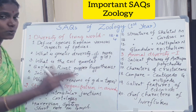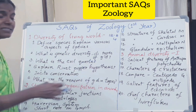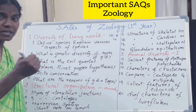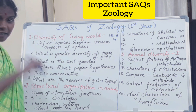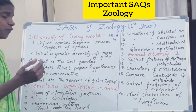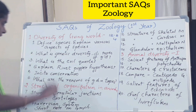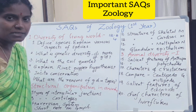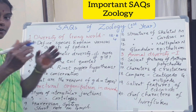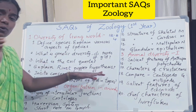Next: what is the evil quartet? The four dangerous things causing biodiversity loss are: habitat destruction and fragmentation, overexploitation, co-extinction, and invasion of alien species. Concentrate on examples too. Then: who explained the rivet popper hypothesis? It was proposed by Paul Ehrlich, who compared the biodiversity ecosystem with an aeroplane. This is a very easy answer and you will score marks here.